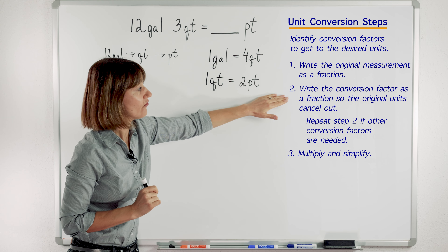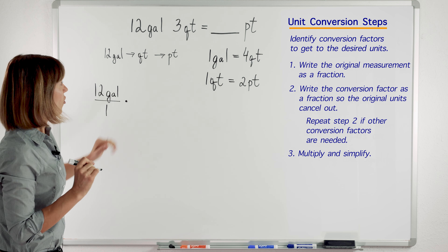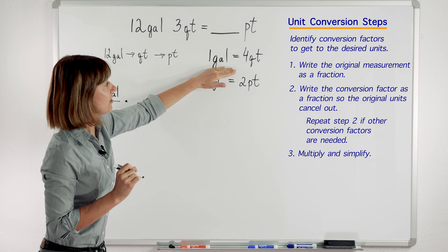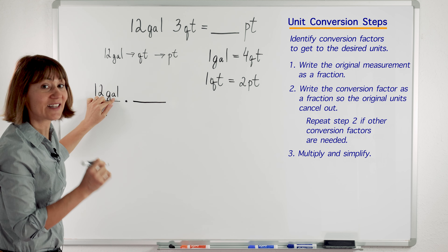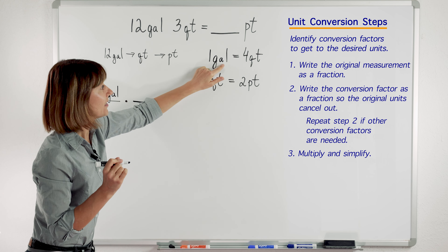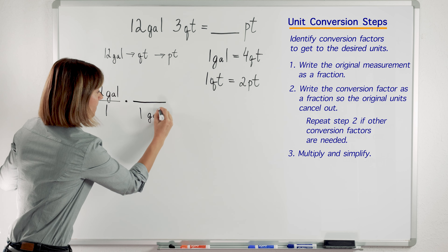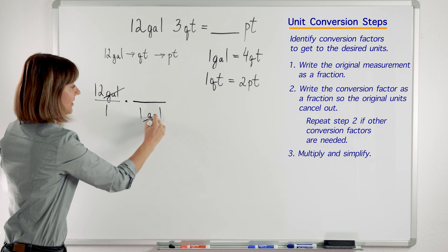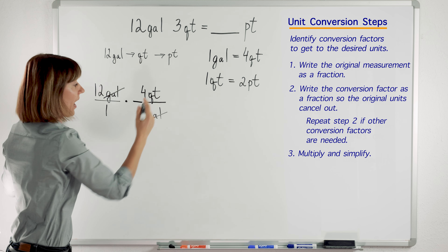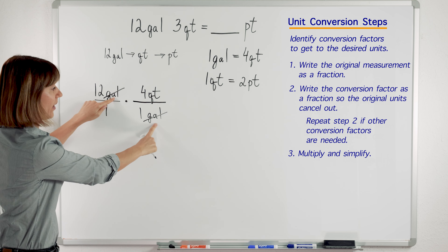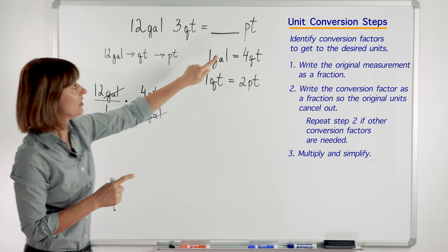The next step tells us to write the conversion factor as a fraction so the original units cancel out. We are going to use 4 quarts, and we will write it as a fraction so the gallons cancel out. I have gallons on top in the numerator, so I will put 1 gallon in the denominator so my units cancel out. And I will put 4 quarts on top in the numerator. How do I know I'm doing it right? My original units cancel out. Now I'm left with quarts and I need to get to pints.